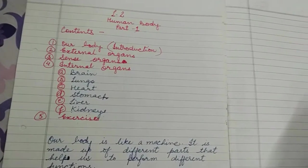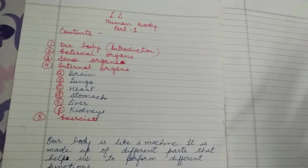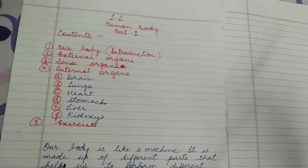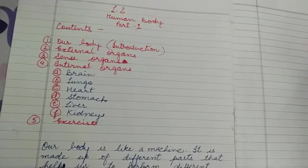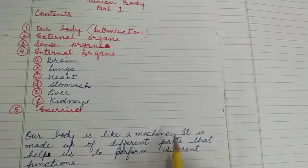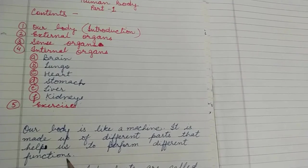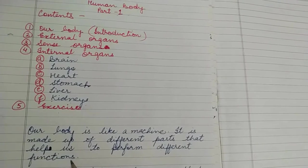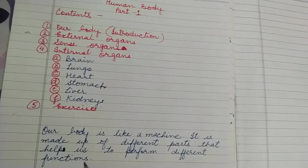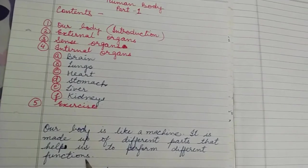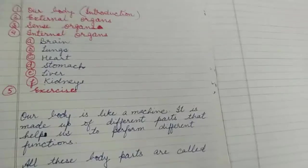Our body is like a machine. Just as a computer has many parts, each with different functions, our body is also made up of different parts that help us perform different functions. Our body is actually more complicated than a computer.